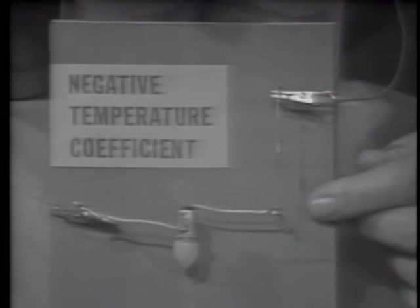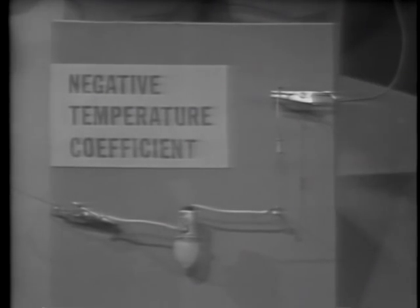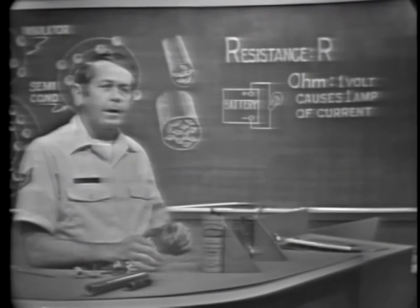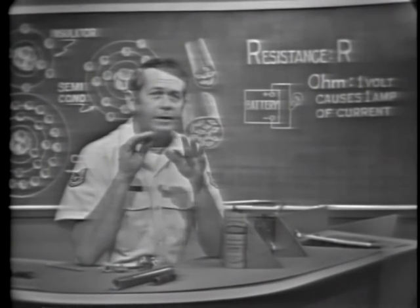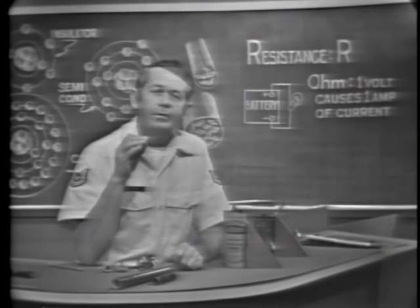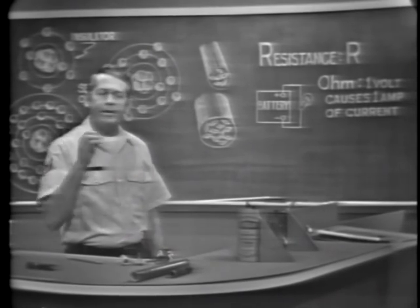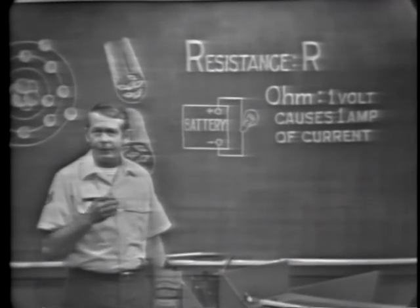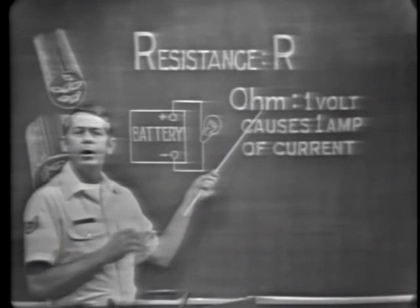Materials that exhibit this property — where resistance decreases with heat — have a negative temperature coefficient. Most materials, however, exhibit a positive temperature coefficient. So length, diameter, and temperature coefficient are all factors that determine resistance. Remember also, the combination of materials used to make up resistive devices will determine resistance. Since different circuits require various amounts of resistance, there's a need to measure it. Resistance is measured in units called ohms — O-H-M, ohm.